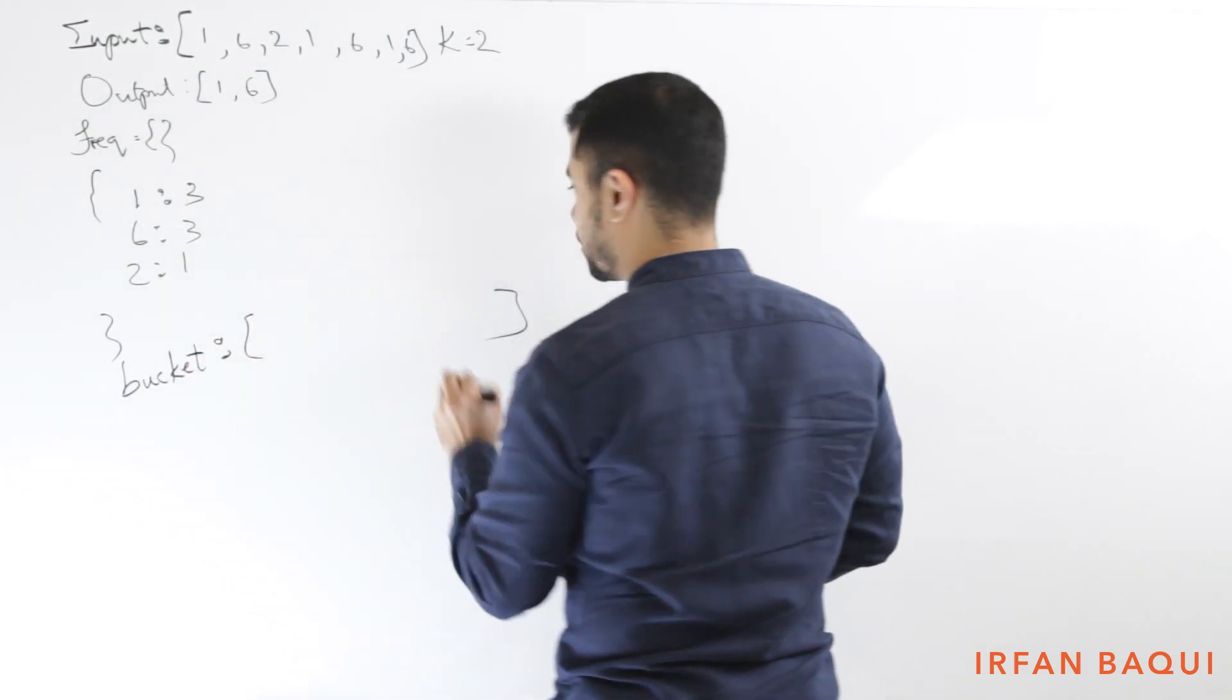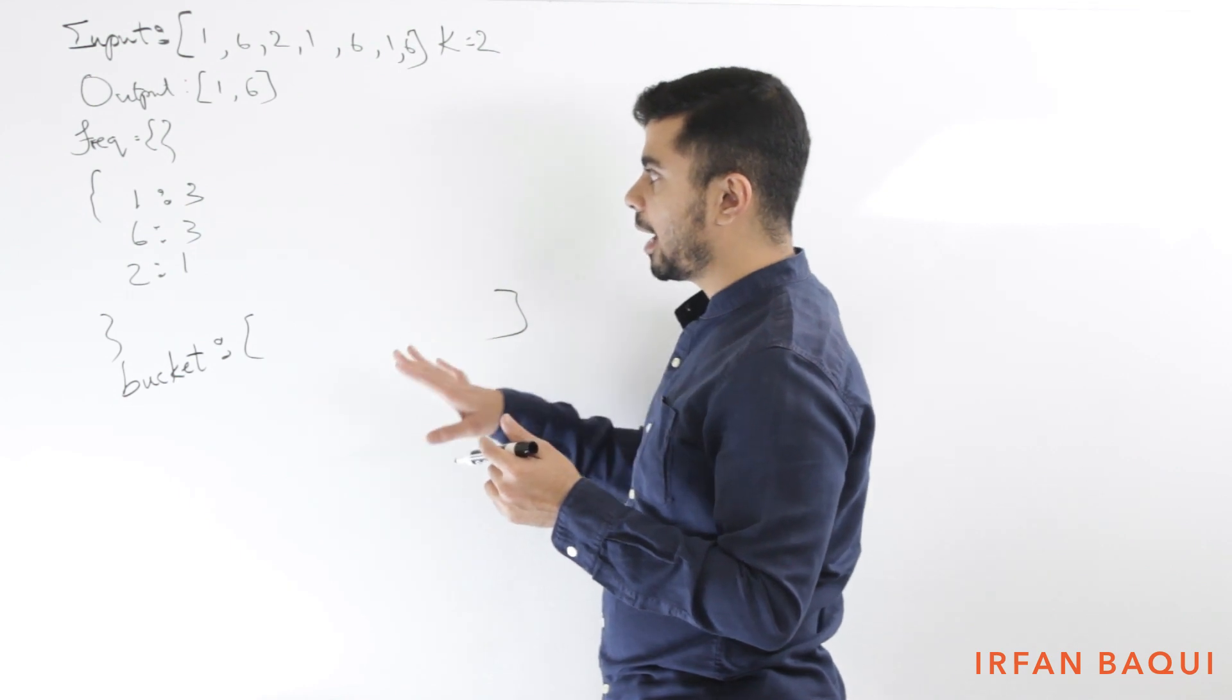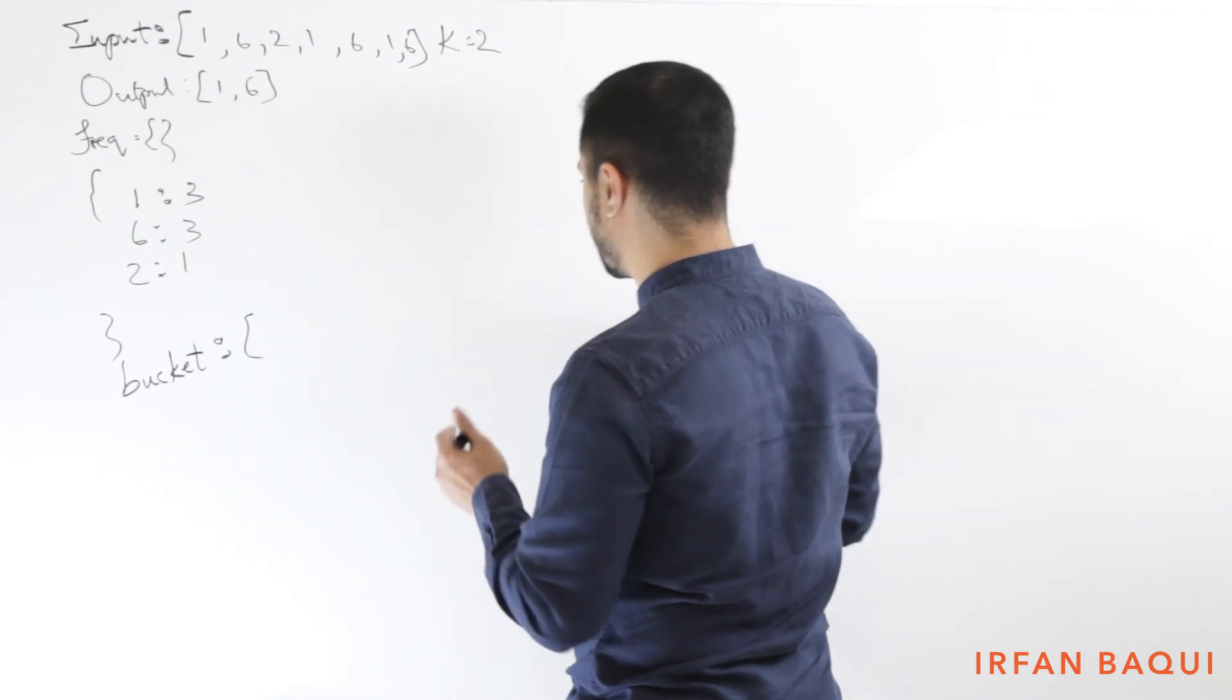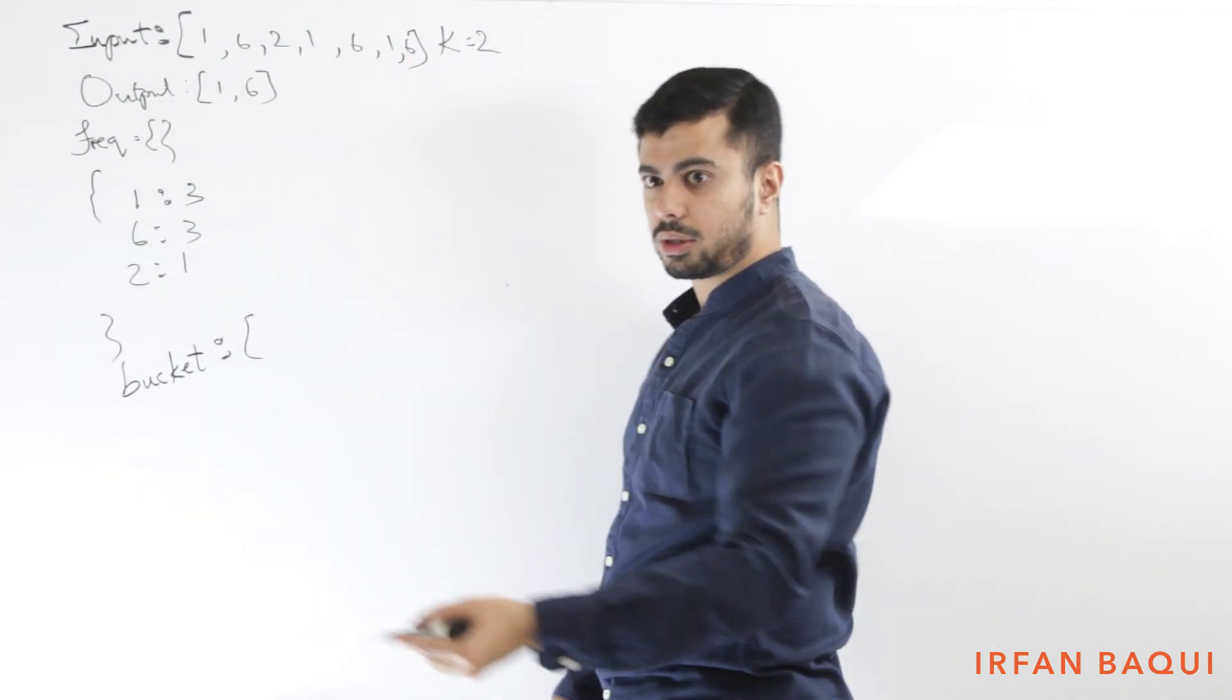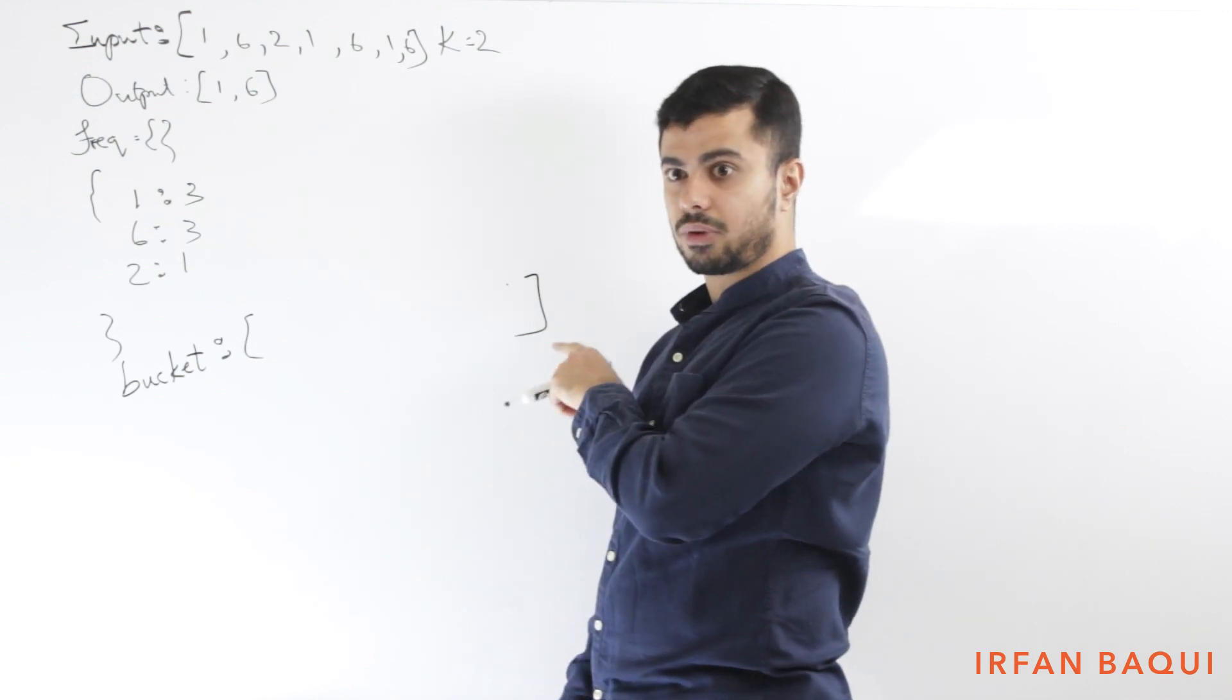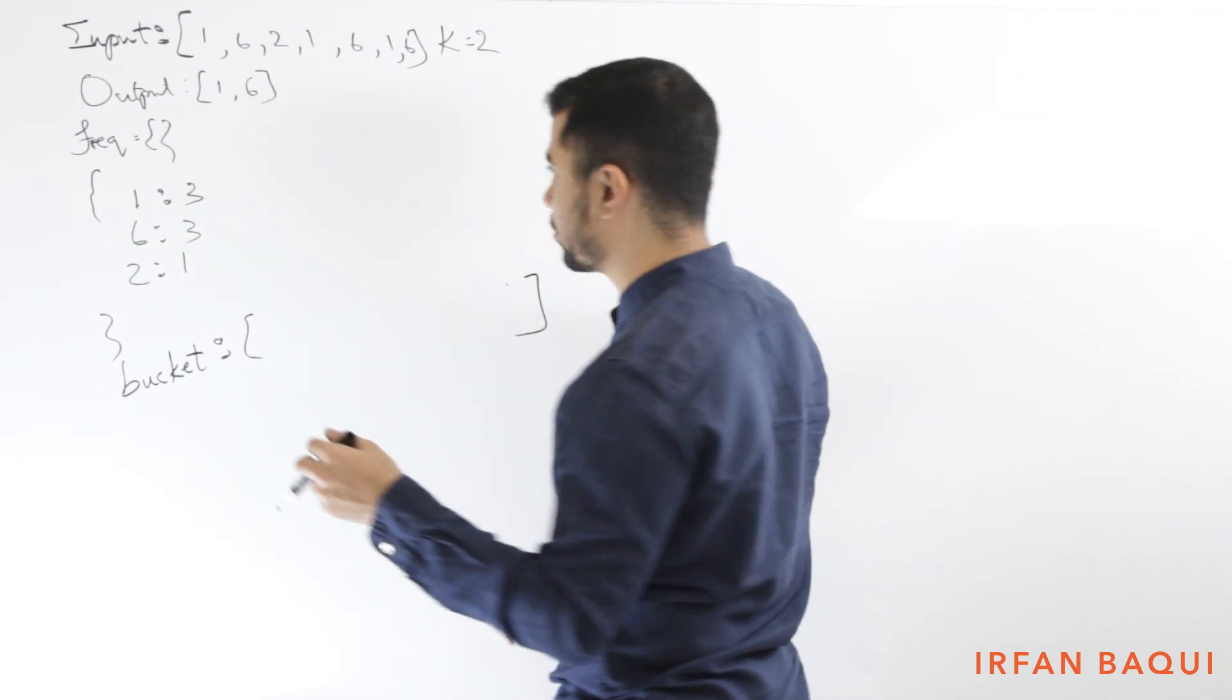So how this will work is, let's say I call this a bucket, because it'll be a bucket of all the elements with a certain frequency. And let's say the bucket looks something like this, it's an array. And at each index, it will have frequencies corresponding to that particular index. So let's say the size of this array is whatever the length of this array is, plus 1. And we totally ignore the index 0, because we don't care about elements with frequency 0, because there'll be like infinite amount of elements.